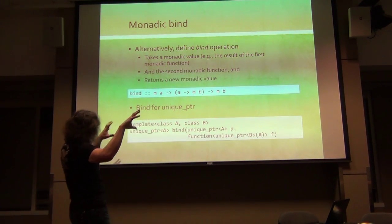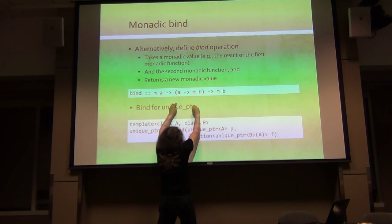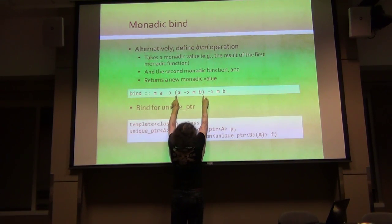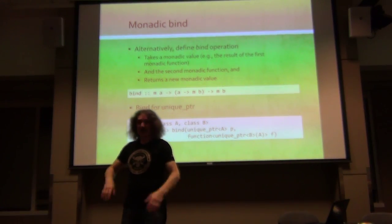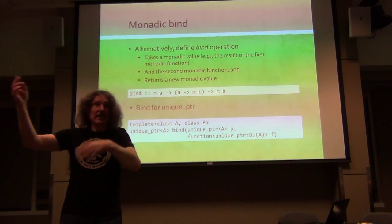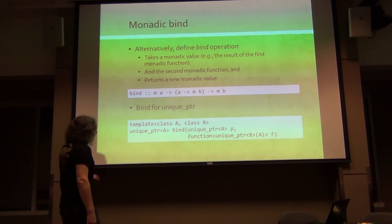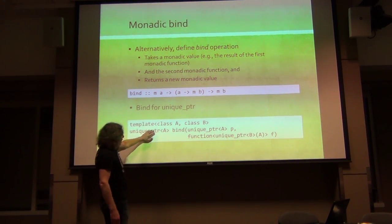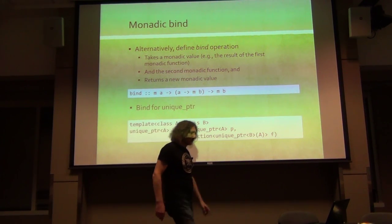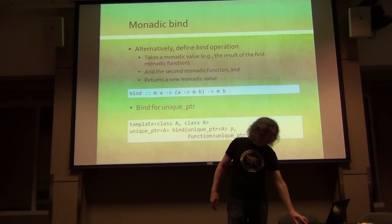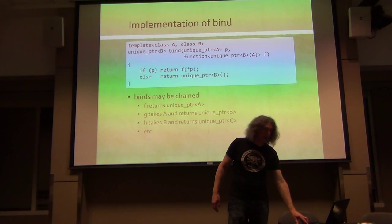Bind takes these two arguments: a monadic value and a monadic function, and should return a monadic value - a new combined async. This is actually the definition of bind. However, there's a correction: the return type of the bind function needs to be fixed.